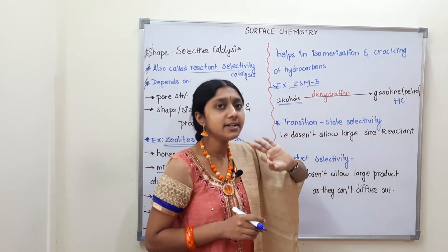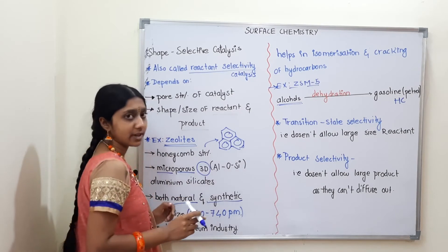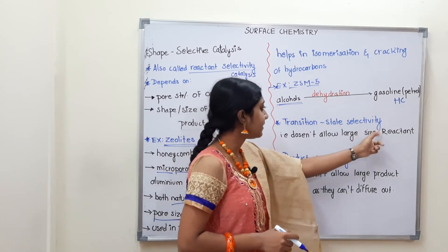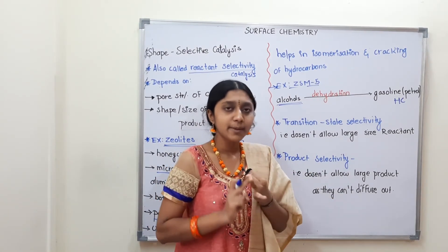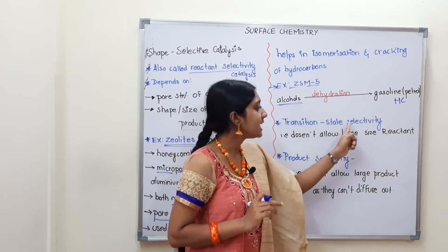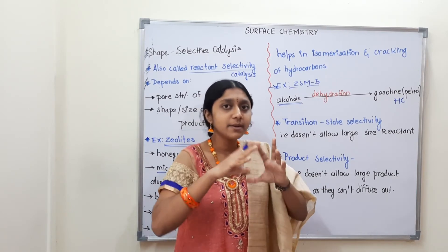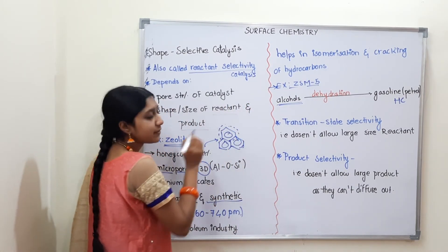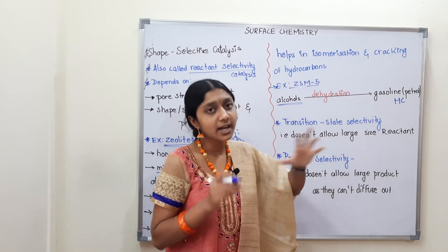Next, there are two important terms to know. Shape selective catalysis depends on the shape and size of reactants and products. First is transition state selectivity — it doesn't allow large-size reactants. It depends on the pore size and shape. Only pore-sized reactants are allowed. If a molecule fits in the pore, it will be catalyzed; if it doesn't fit, the catalyst will not act on it.